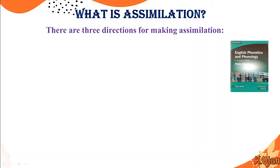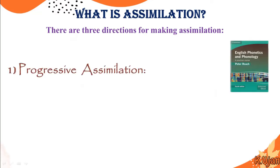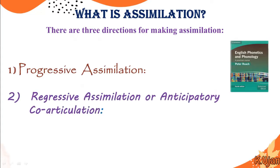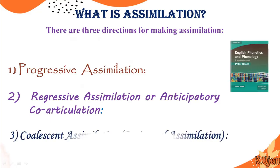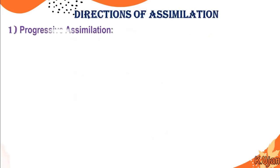There are three directions of assimilation, taken from 'English Phonetics and Phonology' by Peter Roach: number one, progressive assimilation; number two, regressive assimilation or anticipatory co-articulation; and number three, coalescent assimilation, also called reciprocal assimilation. Let's define each one.